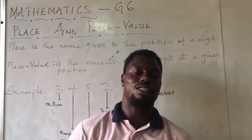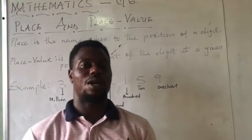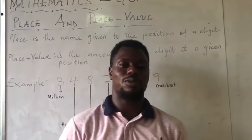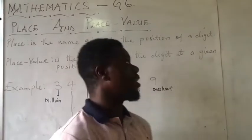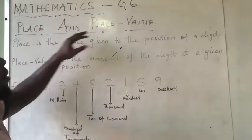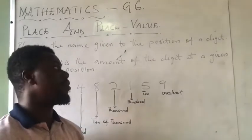Today we are going to look at a different indicator. Now we are done with writing figures in words and words in figures. Today we are looking at something new. And today our indicator is place and place value.